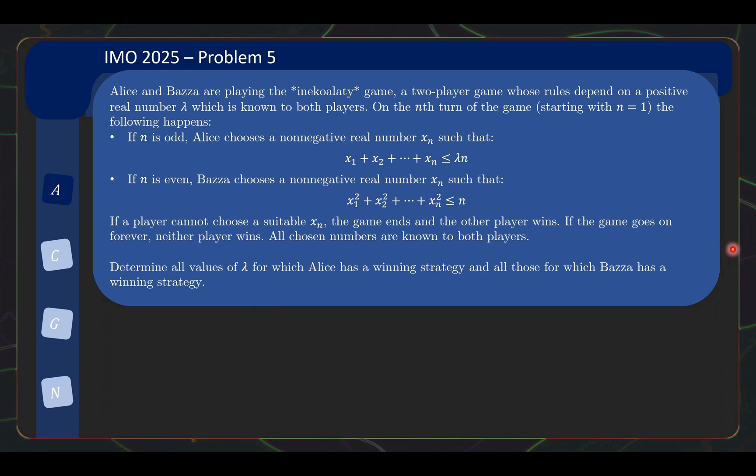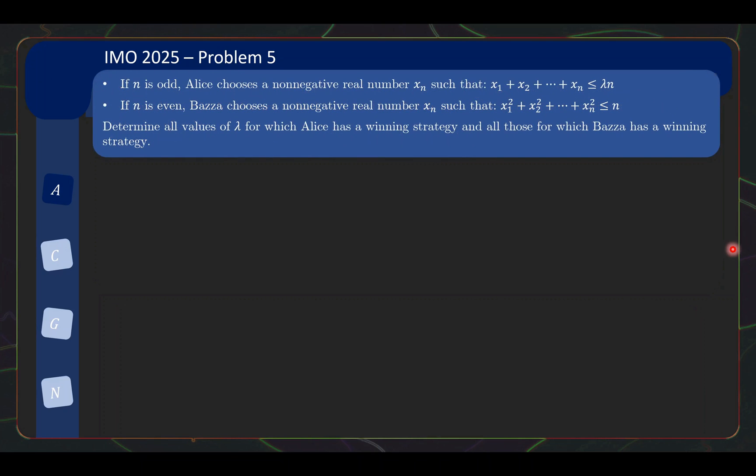If the game goes on forever, neither player wins. All chosen numbers are known to both players. So we are supposed to determine all values of lambda for which Alice has a winning strategy, and all values of lambda for which Bazaar has a winning strategy. The problem statement is a bit long so I condensed it. Basically the players take turns starting with Alice. Alice must pick a number such that it can still fit within this budget. Notice Alice's budget is up to lambda n. Then Bazaar's turn, Bazaar is supposed to pick a number as well on his turn. But for Bazaar, the budget is calculated up to n, but the budget involves the square of the numbers. So they will take turns and we are supposed to see for different values of lambda, which values such that Alice has a winning strategy, which values such that Bazaar has a winning strategy.